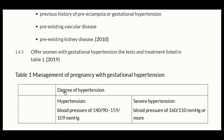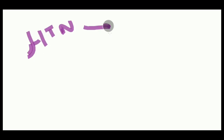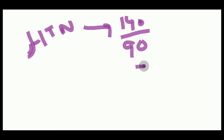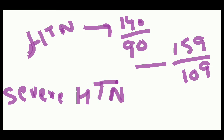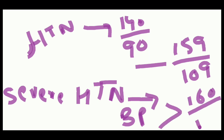Offer women with gestational hypertension the tests and treatments listed in the table. According to the new guideline, hypertension is divided into two main categories: hypertension, when blood pressure is 140/90 up to 159/109, and severe hypertension, when blood pressure is 160/100 or more. Management of gestational hypertension is based upon these two categories.